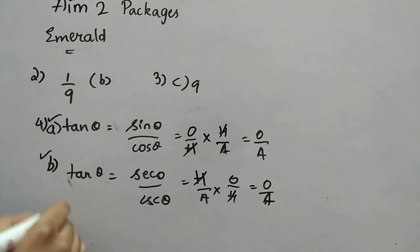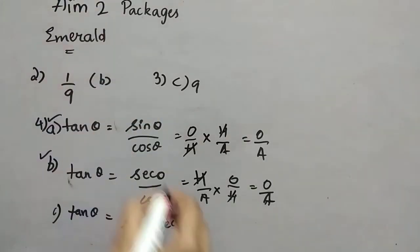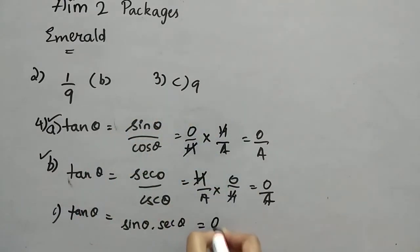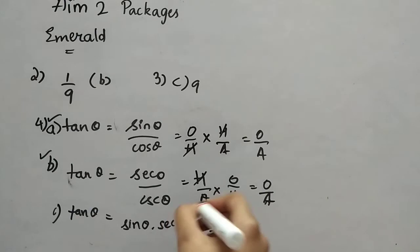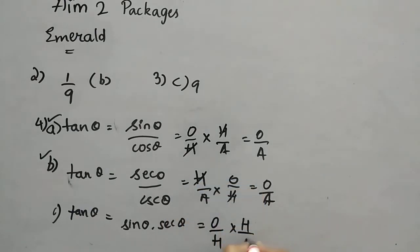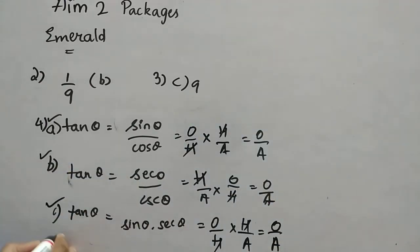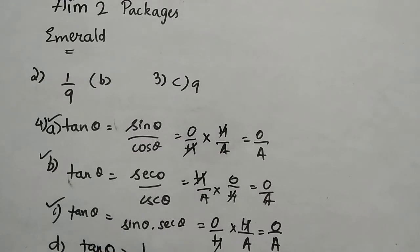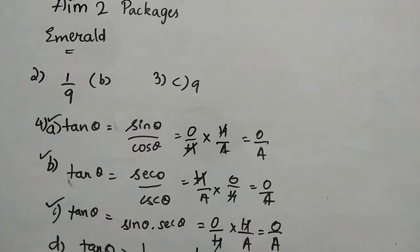Option C is sin θ × sec θ: sin θ = O/H and sec θ = H/A. Multiplying, H cancels giving O/A — tan θ again, so option C is correct. Option D says tan θ = 1/cot θ. Since cot is the reciprocal of tan (A/O), then 1/cot = O/A = tan θ. Option D is also correct.